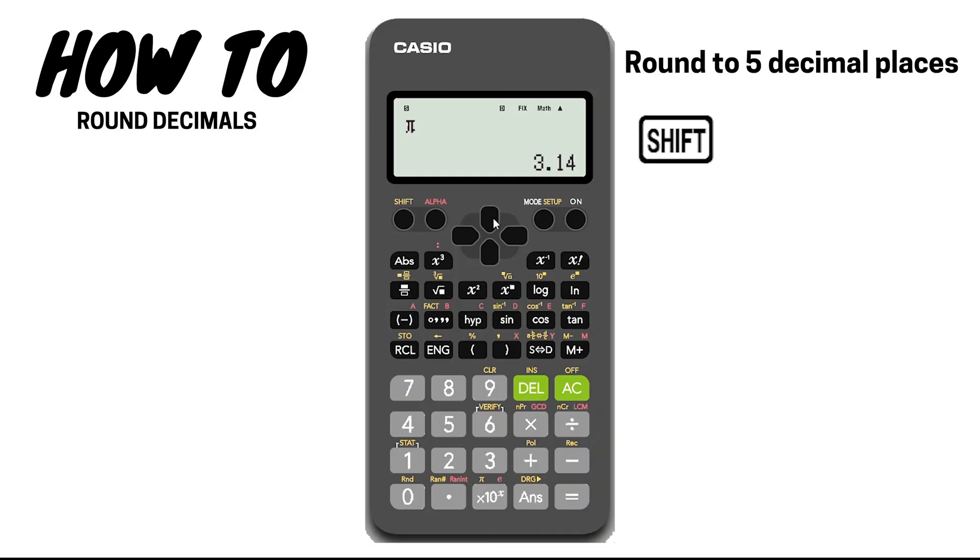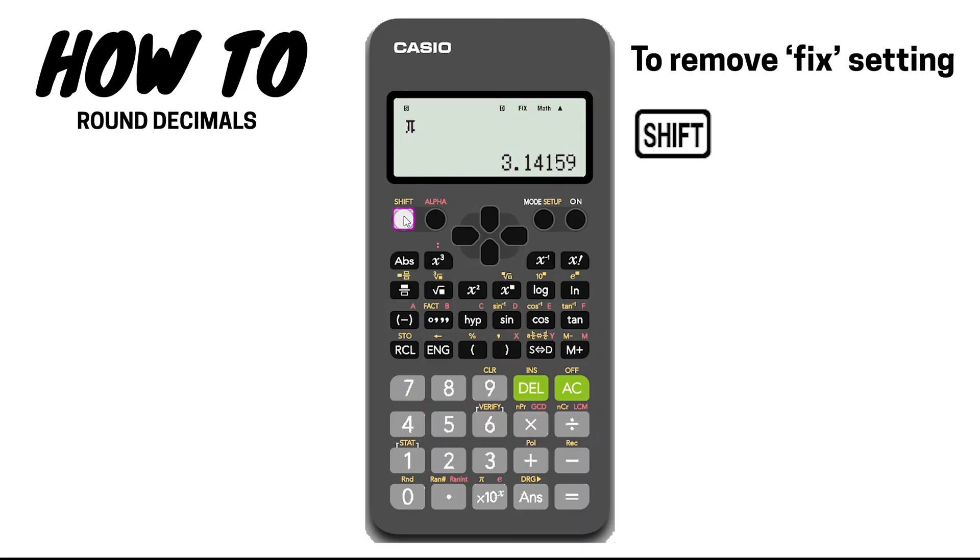You can see that pi has been rounded to two decimal places. Here is another example, this time rounding to five decimal places. Note that the calculator stores this setting, so all calculations that you enter will be rounded to whatever number of decimal places you have set. To remove this setting, press shift, mode, eight or norm, and then the number two, or you can reset your calculator to factory settings, which you learned in trick number one.